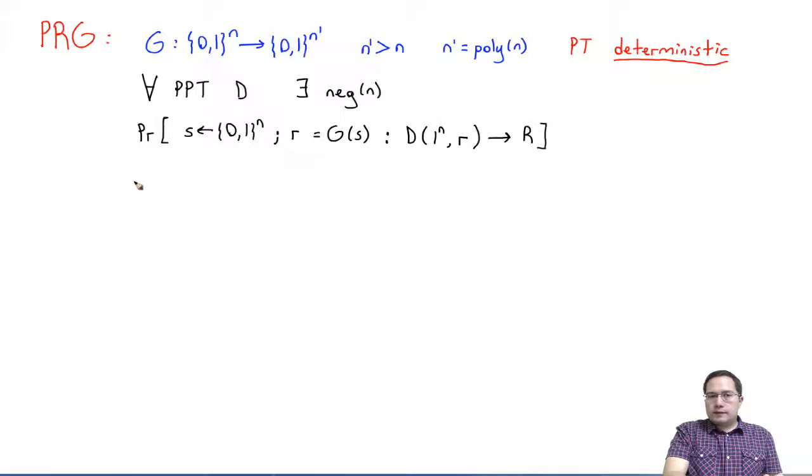And on the other hand, I will look at the probability that now I'm not going to pick a seed and run through G. But I will still compute a value R. But I will pick it uniformly randomly.